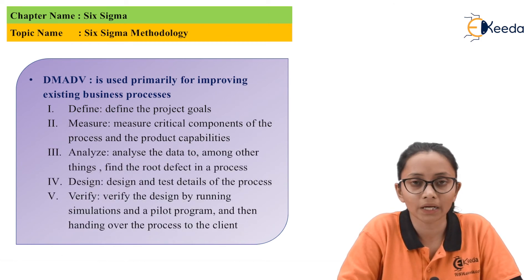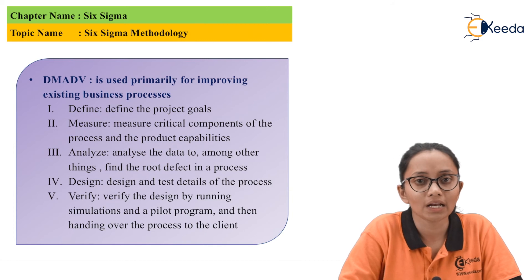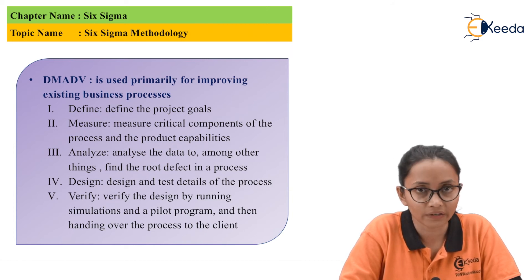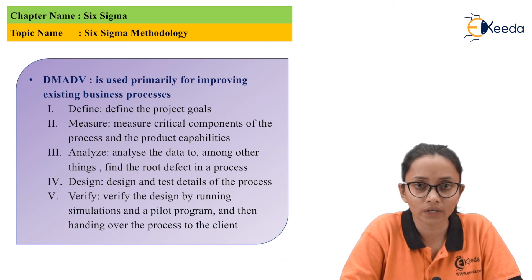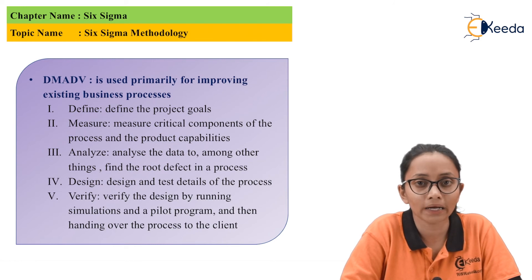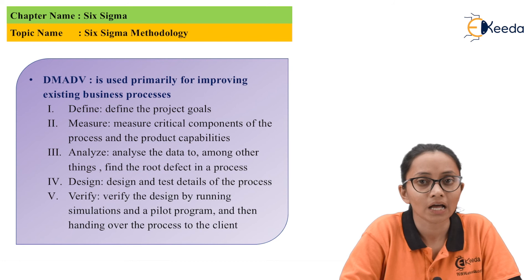All the steps are the same in both DMAIC and DMADV, only the last and second last stages are different, which are Design and Verify. In the Design stage, we redesign and create an improvised alternative to the current product. And in Verify, we do a pilot run and test whether the manufactured product is performing its required function or not. Once the verification is done and it is up to the mark, then the design is sent for manufacturing.